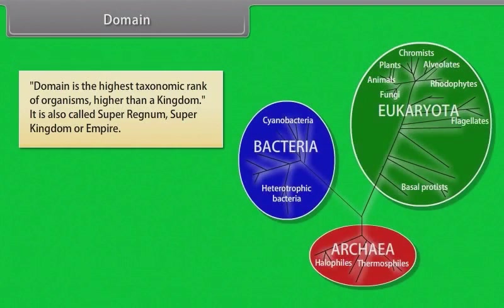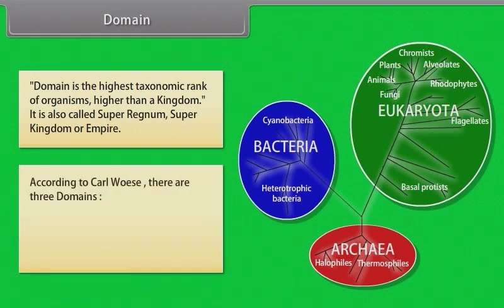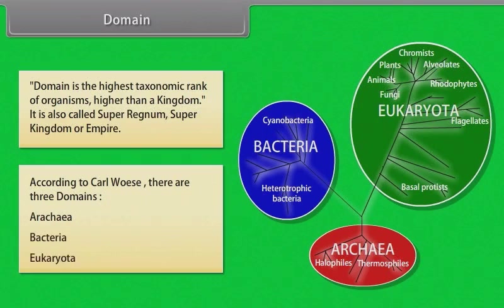Domain is the highest taxonomic rank of organisms, higher than a kingdom. It is also called super regnum, super kingdom, or empire. According to Carl Woese, there are three domains: Archaea, Bacteria, and Eukarya.